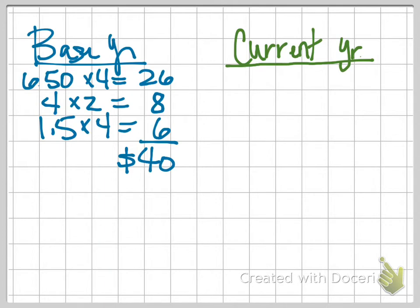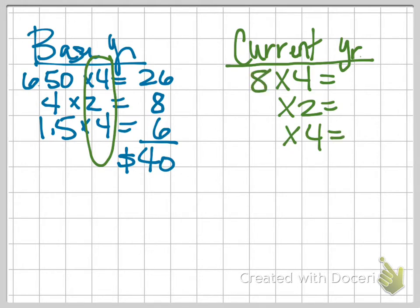So this part here, these are our quantities if you went back to the other screen. So the four tickets, two popcorns, and four sodas. But our prices now are $8 for the tickets, $4 for the popcorn, and $2 for those sodas. So we have $32, $8, and $8, which will give us a total basket cost in the current year of $48.